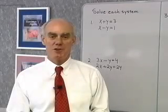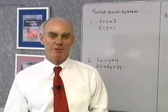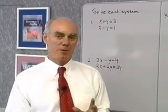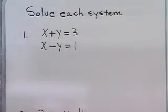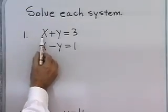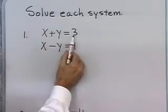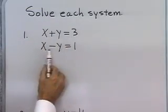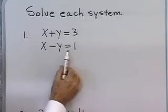We're going to solve systems of equations by eliminating one of the variables from the pair of equations. The first problem is: x plus y is equal to 3, and x minus y is equal to 1.